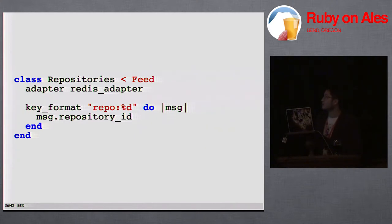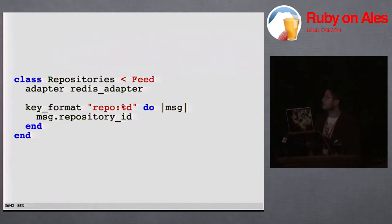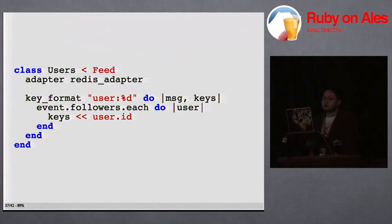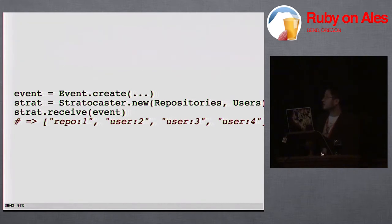Here's the current Ruby API for Stratocaster — it's still a little weird, and I haven't released it yet. It's on GitHub if you know where to look, hidden in a toy project with no tests. Basically we define what timelines we want to store, and we have this key format method that yields a block every time we give Stratocaster an event. We try to build the Redis list key based on the repository ID. The events give us the followers, and we take those users and build Redis keys for their timelines.